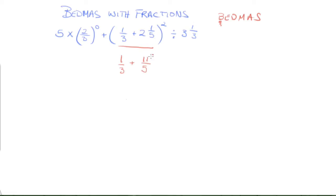And I can close the brackets, put the square, and I'm just going to recopy everything as it was. So 5 times 2/3 to the power of 0 plus this bracket, which I started working on, divided by 3 and 1/3.